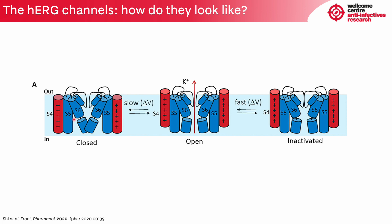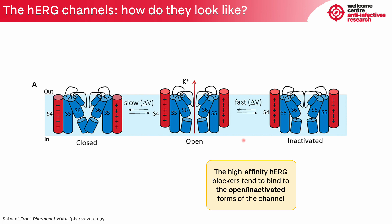The channel can exist in three states: the closed state, the open state — in which potassium cations are allowed to move from the intracellular to the extracellular medium — and also the inactivated state. Importantly, the majority of high affinity HERG blockers bind to the open or inactivated forms of the channel, meaning they need to permeate through the membrane, enter from the intracellular medium, and then bind to certain amino acids in the pore domain, either blocking potassium cation passage or super-stabilizing the inactivated form.